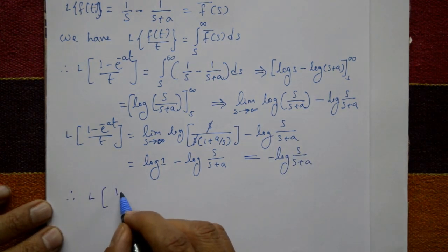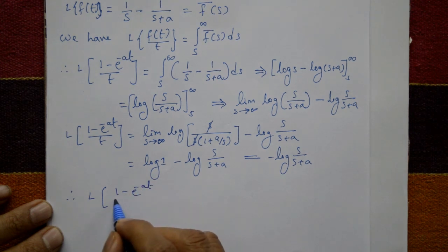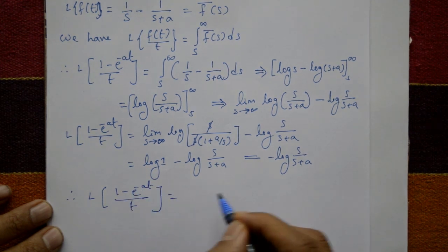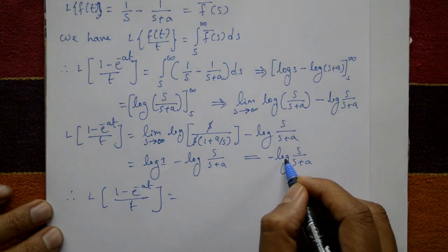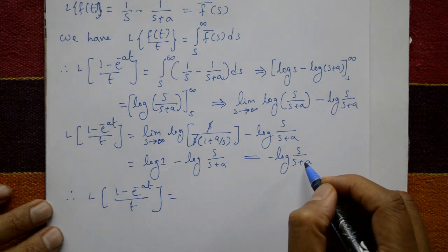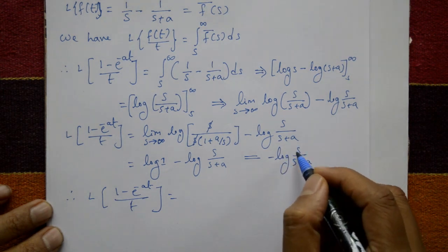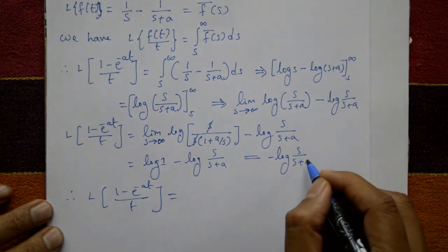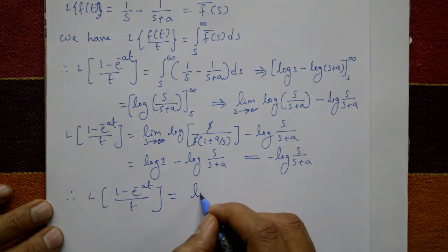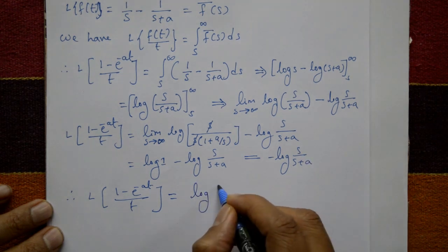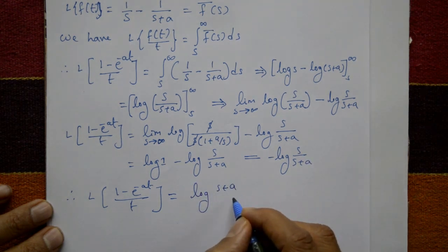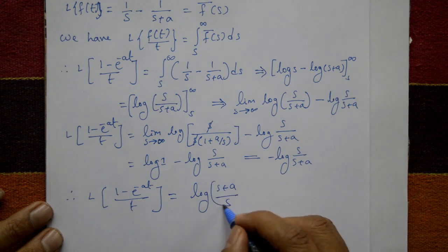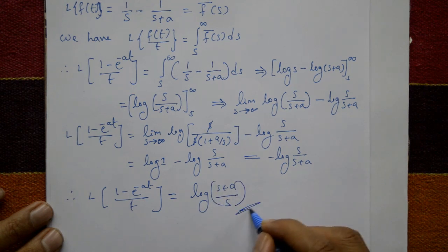Therefore, Laplace of (1 minus e raised to minus at) divided by t equals minus log of s upon s plus a. Writing this as positive by interchanging numerator and denominator gives log of s plus a divided by s. This is the required solution.